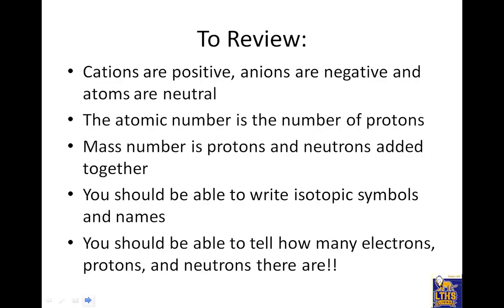To review, cations are positive and anions are negative, and atoms are neutral. The atomic number is the number of protons. That's what I've been calling p-positive. Mass numbers, protons plus neutrons. Add it together. You should be able to write isotopic symbols and names, and I think we can do that. That's not too bad. You should be able to tell how many electrons, protons, and neutrons there are. And I can do that, and I can say toodles. So, toodles.